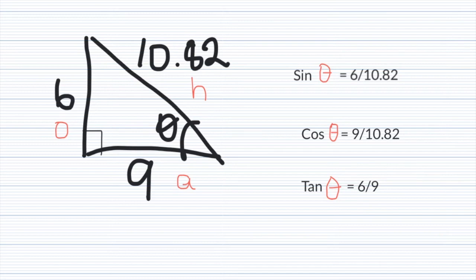So the sine of the angle is the opposite side, which I've labeled 6, divided by 10.82, which is the hypotenuse. The cosine of θ is 9 divided by 10.82, and the tangent of θ is 6 divided by 9, which is the opposite divided by the adjacent.